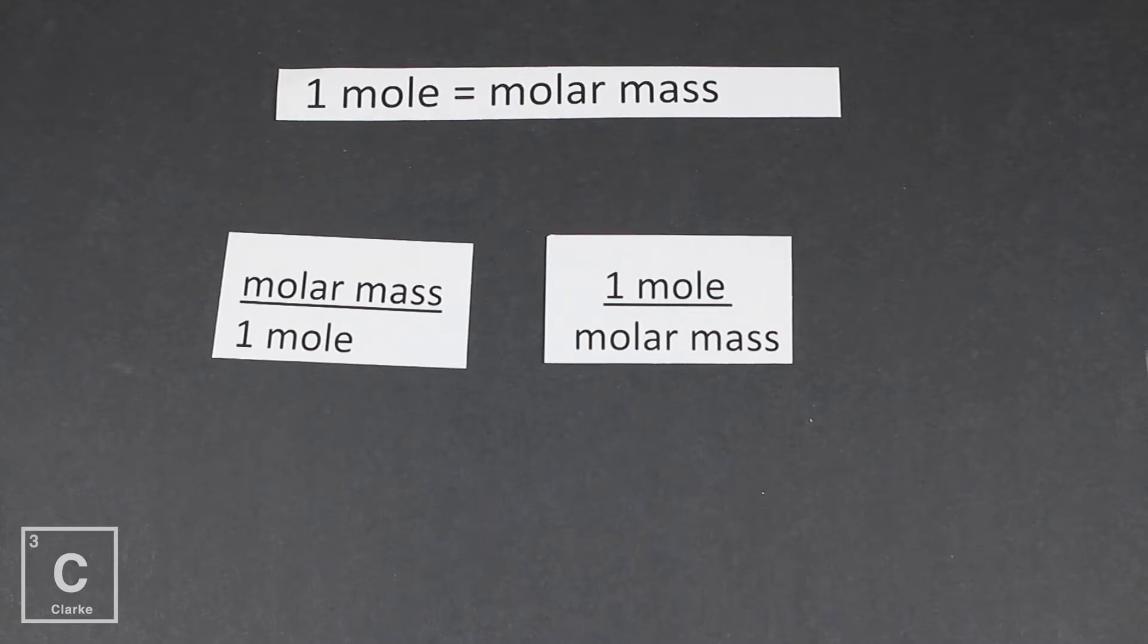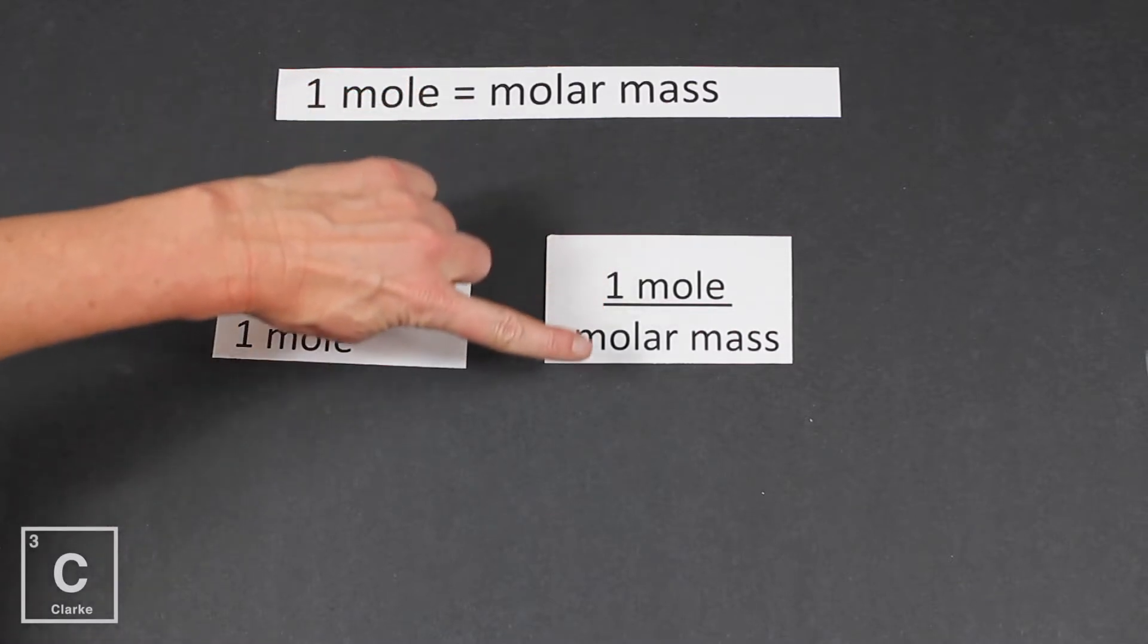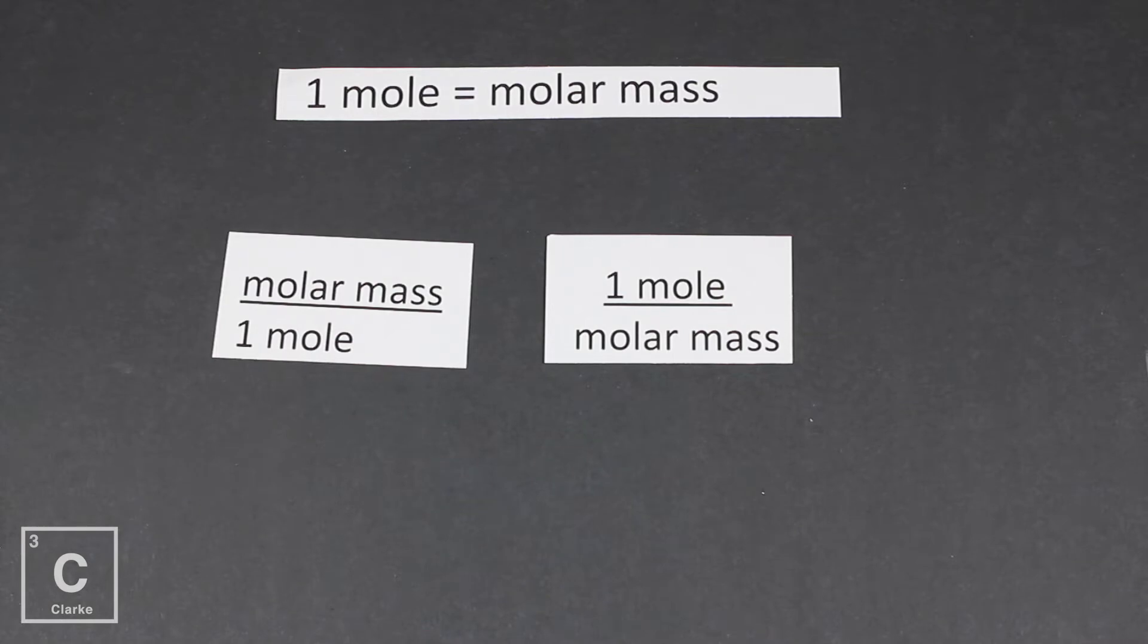So let's rewrite that statement. One mole is equal to molar mass. Let's write that as a conversion factor. The molar mass is equal to one mole. One mole is equal to the molar mass. It really just depends which one we need on top and which one on bottom. But they both say the exact same thing.